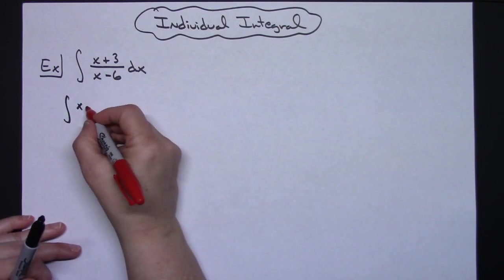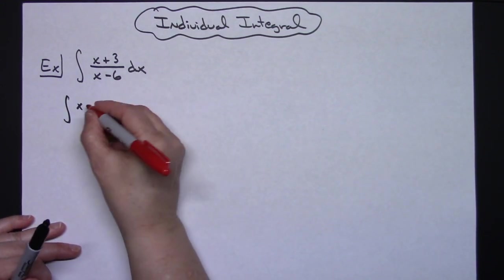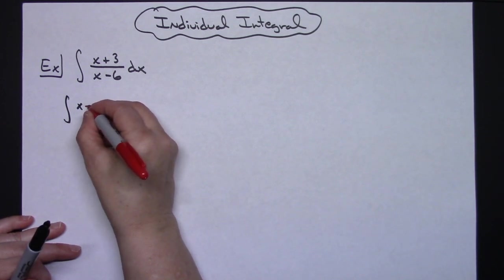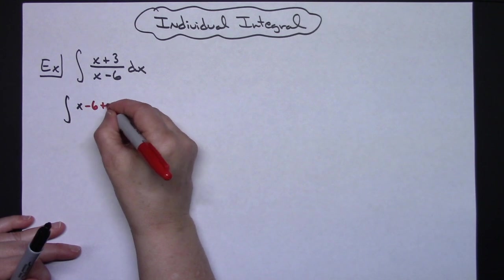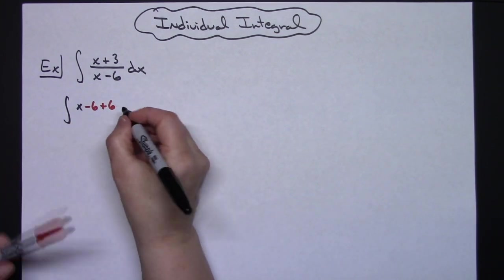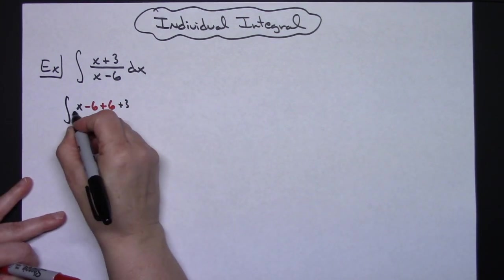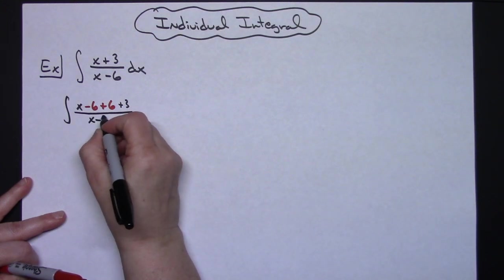So I'm going to go minus 6. Well, to legally be able to do that and not change the problem I've got to go ahead and add 6. I still have that plus 3 that's in the numerator and then I've got the x-6 in the bottom there.